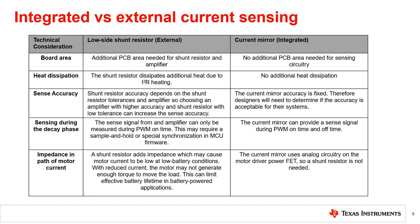This table shows some of the major differences between the external and integrated current sensing methods. One main advantage of the integrated method is that it eliminates the need for a shunt resistor, which helps reduce the board size and heat dissipation. Low heat dissipation will help maintain the board running at much lower temperatures. Another disadvantage of the external method is not allowing current monitoring during the H-bridge decay phase. However, the current mirror architecture allows for current sensing even during the decay phase. An advantage of the external method is better sensing accuracy, since choosing an amplifier with high accuracy and a shunt resistor with low tolerances can increase accuracy. The current mirror accuracy is fixed, so designers will need to determine if the accuracy is acceptable for their system.